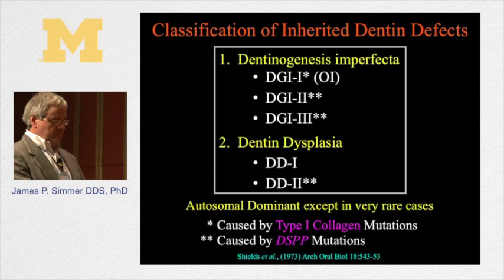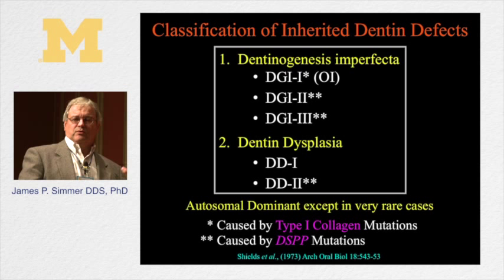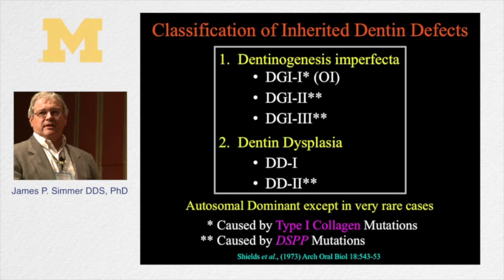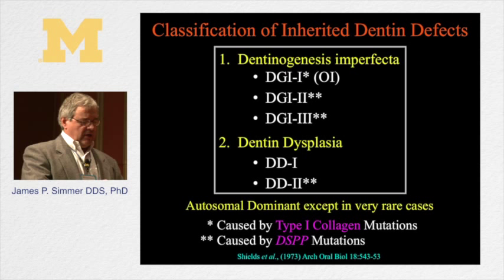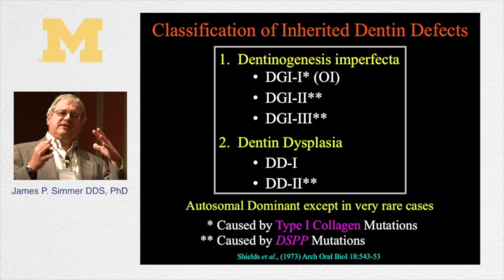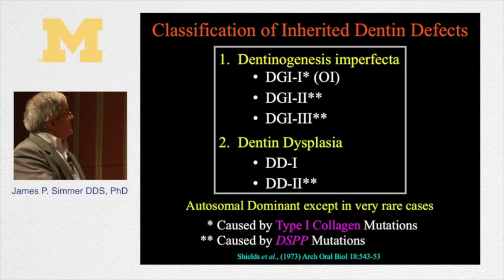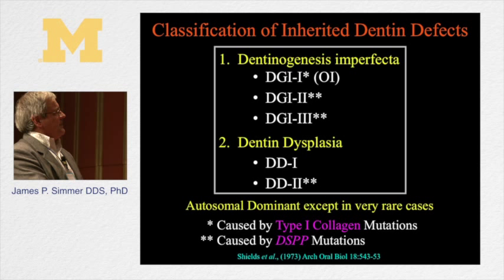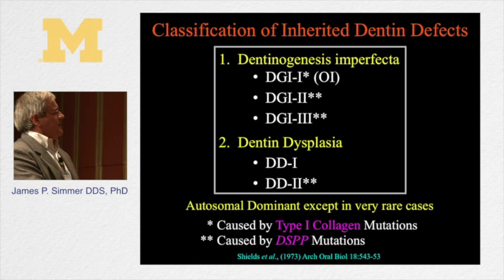Now let's focus on dentin. This is the clinical classification of inherited dentin defects, proposed in 1973 when not much was known about how these conditions formed. Dentinogenesis imperfecta type 2, dentinogenesis imperfecta type 3, and dentin dysplasia type 2 all seemed to be different entities in 1973. But now we find that they're all caused by DSPP mutations — they're different levels of severity of the same disease. DGI type 1 is actually osteogenesis imperfecta, the syndromic form of dentinogenesis imperfecta caused by mutations in the two type 1 collagen genes.